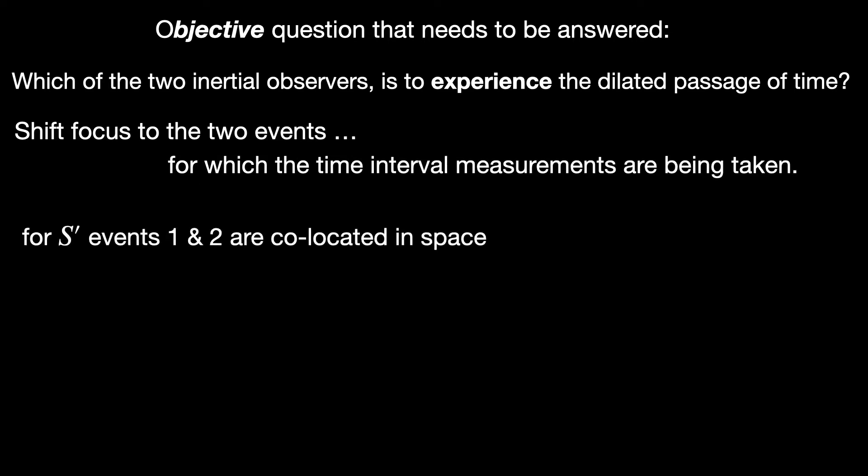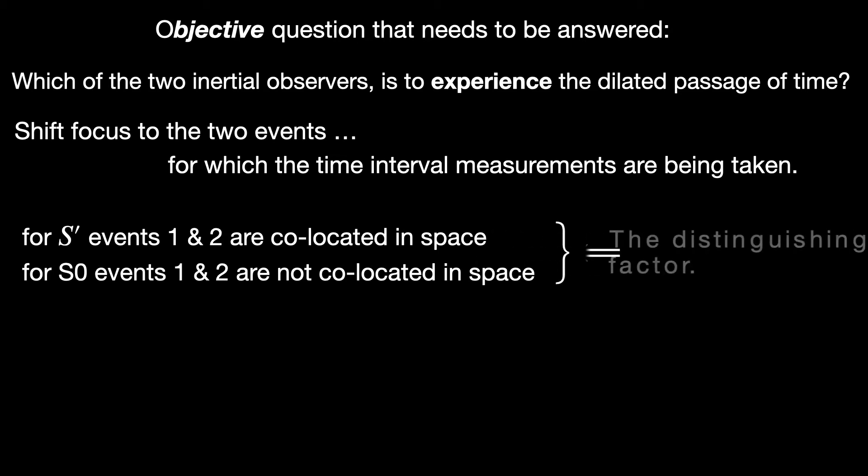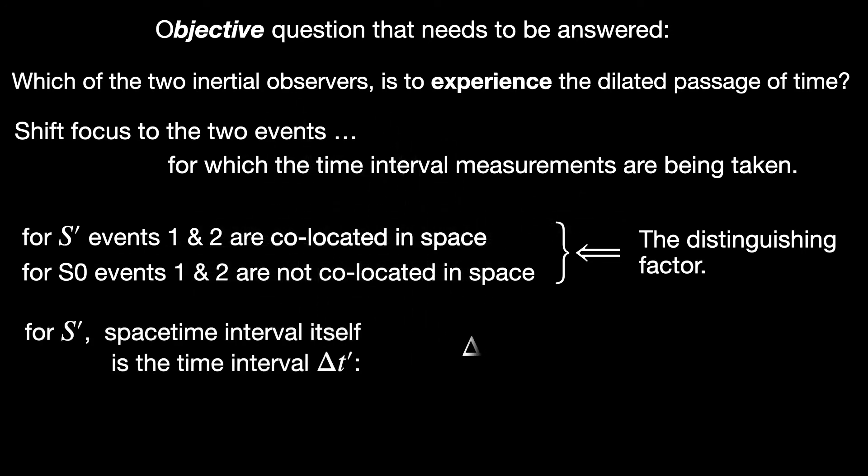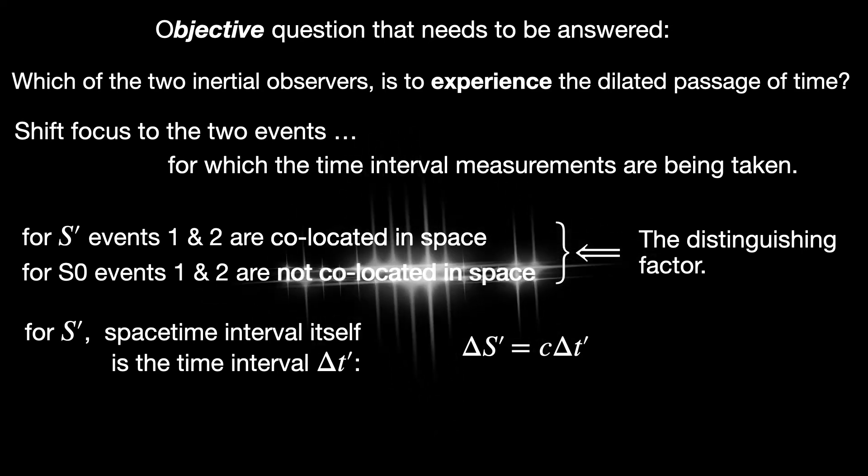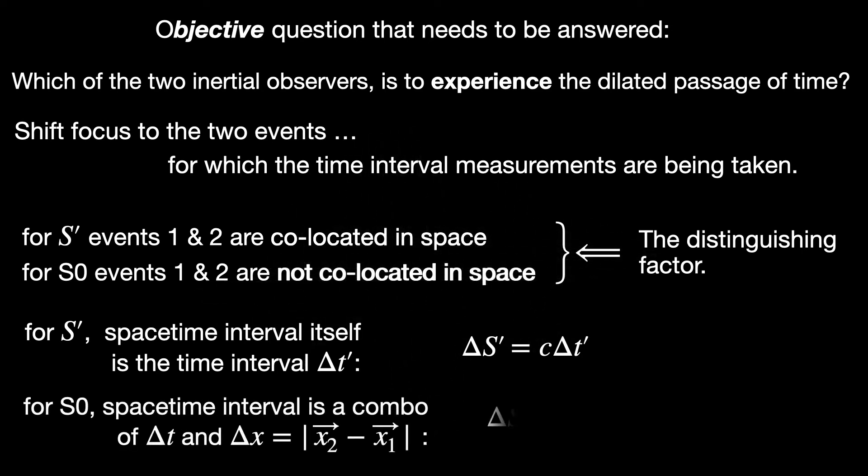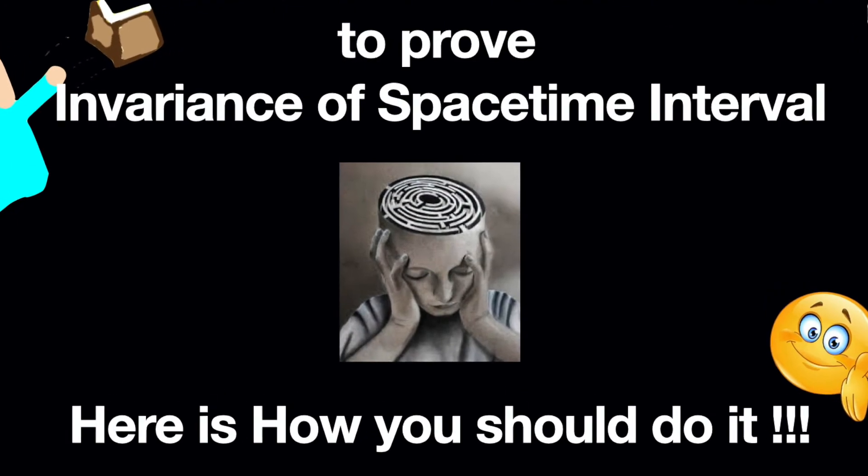S' sees both events at the same spatial location. This is important. We in S0 see them at different spatial locations. That's the distinction between S0 and S'. Since for S' there is no spatial separation between these events, he sees the space-time interval between them as time interval only. But we see the space-time interval as a combination of spatial and temporal intervals. By the way, I am assuming you know about space-time interval and its role in special relativity. But in case you don't, definitely check out the video in the i button. There you will find all about it.